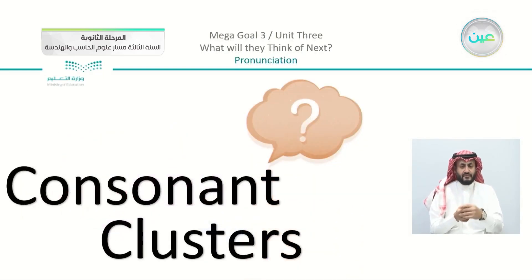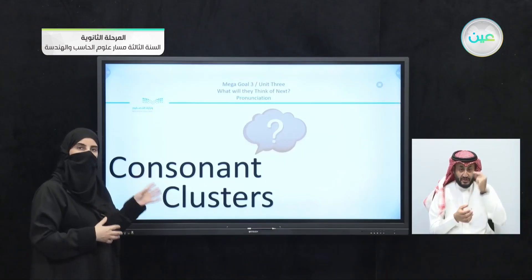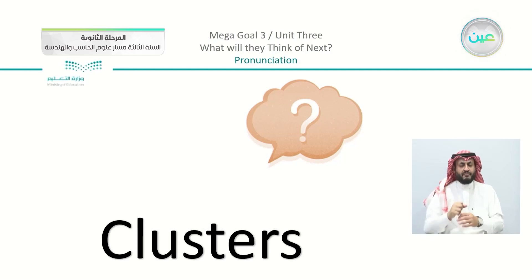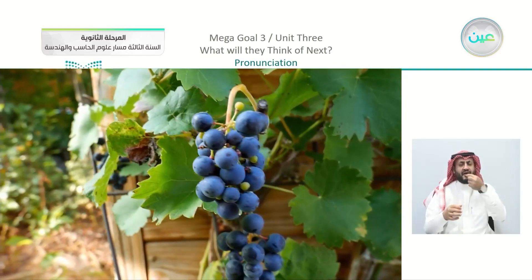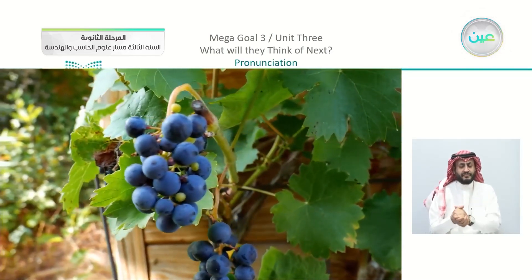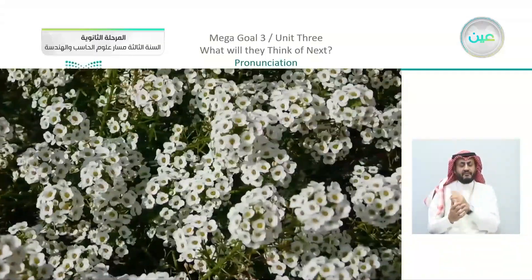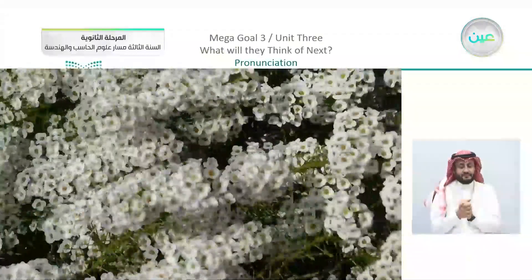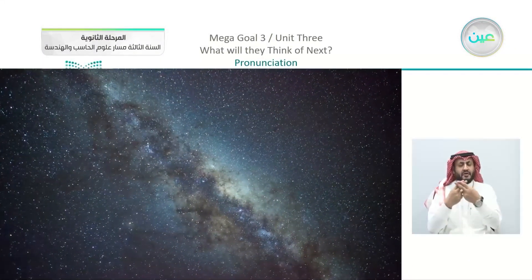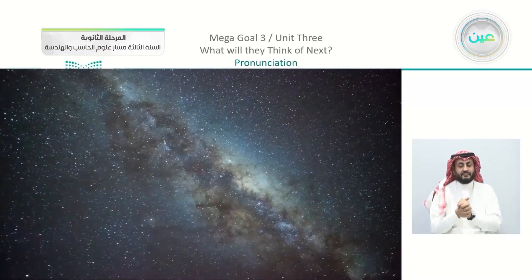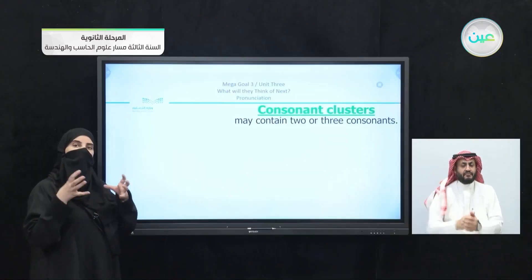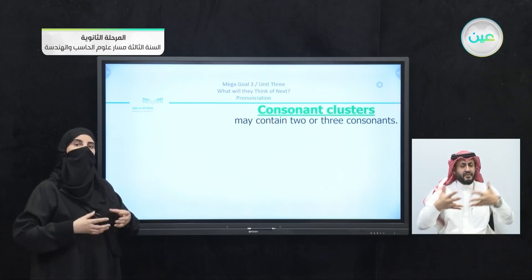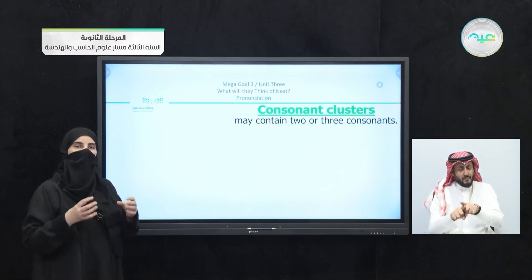We are going to focus on our new lesson: consonants and clusters. We know what a consonant means, so let's focus on the word 'clusters.' What are clusters? I'm going to show you some pictures. You can see these grapes — we say they are clusters. Also, we have flowers that are also in clusters, and stars can also be clusters. So in these three examples, clusters are things that are grouped together. When I talk about consonant clusters, I am talking about letters that are together.